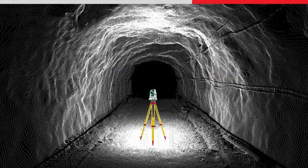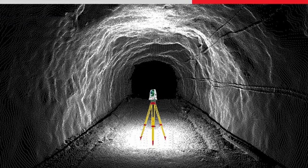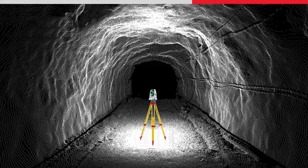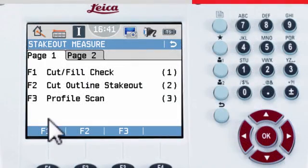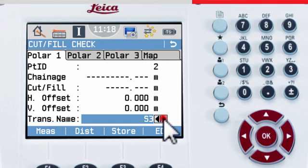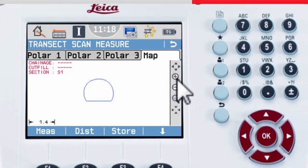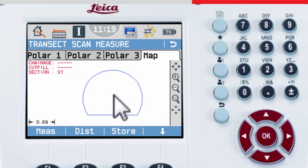Imagine the tunnel has been blasted and you need to check the cut and fill in order to see if you are above or under excavation. Choose cut fill check from the stake out measure menu. Choose the appropriate cross section to check and then take a distance to start the stake out information.